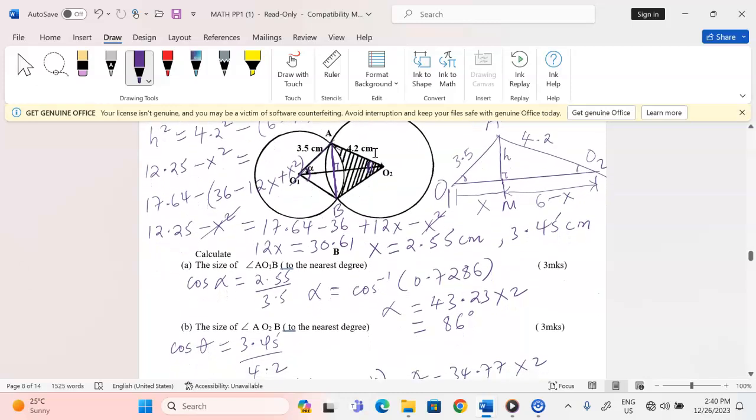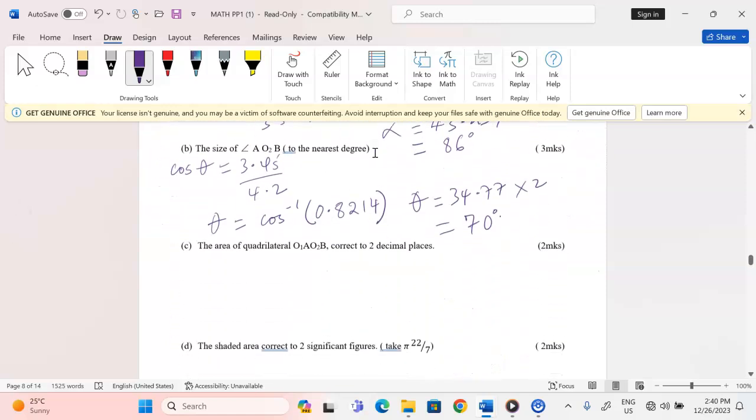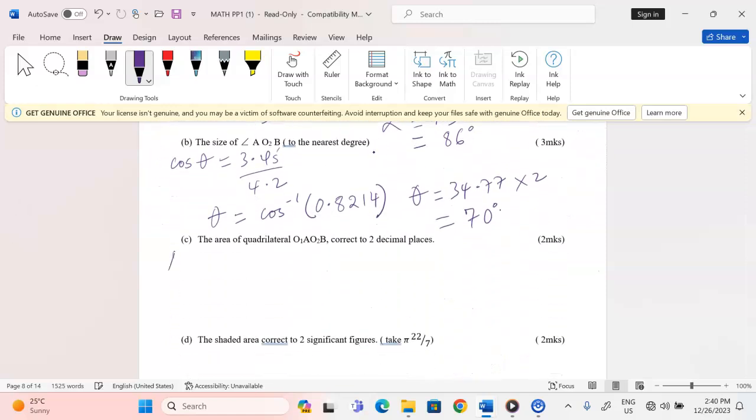The first triangle, because area of a triangle is half times the two sides, 3.5 times 3.5, then the sine of the angle in between the two, which is 86. Then area two is half, two lengths 4.2 times 4.2, sine of the angle included, the angle is 70.